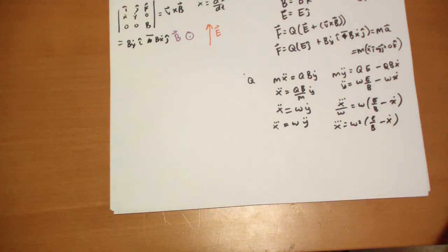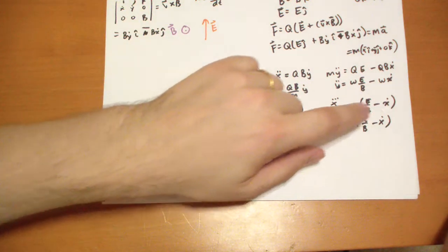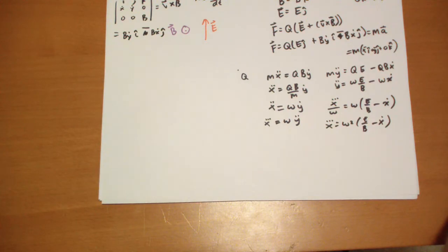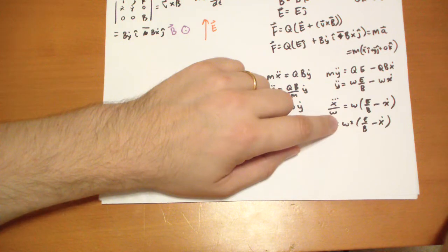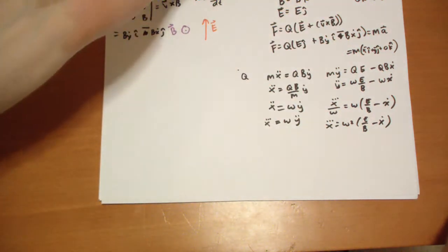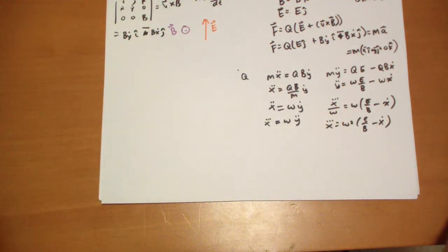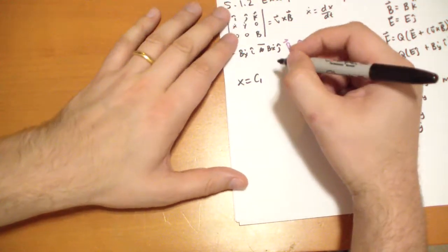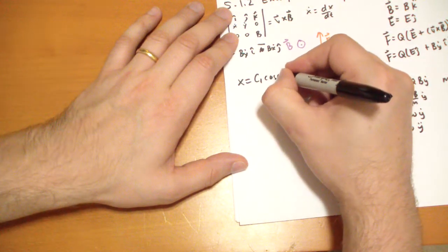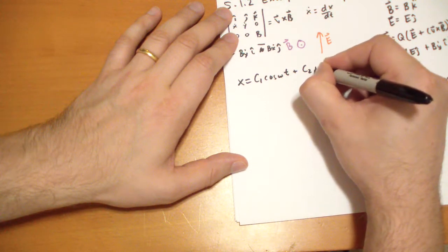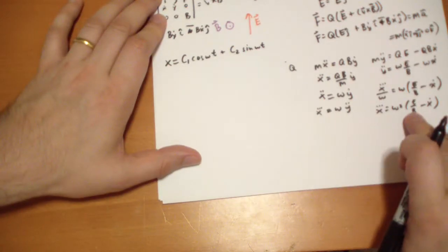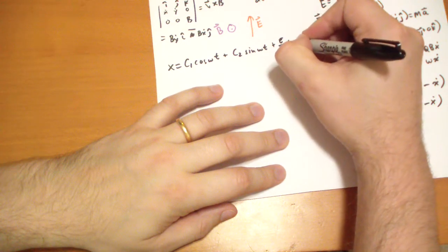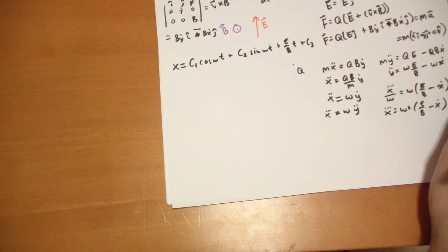We scratch our heads and ask: what could x possibly be? The fact that the third time derivative equals something times the first time derivative suggests we're going to have sines and cosines. You can see this omega squared that comes out — take the derivative twice of a sine or cosine, you get back what you originally had times a negative coefficient. So we take a stab and say x equals c1·cos(ωt) plus c2·sin(ωt), and to cancel the E/B term we add an E/B·t term, plus a third constant c3.